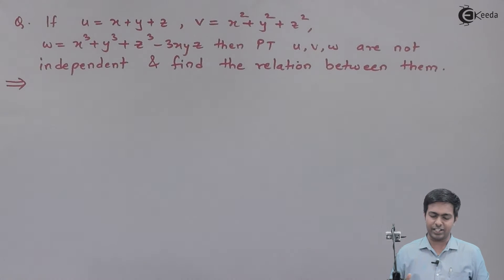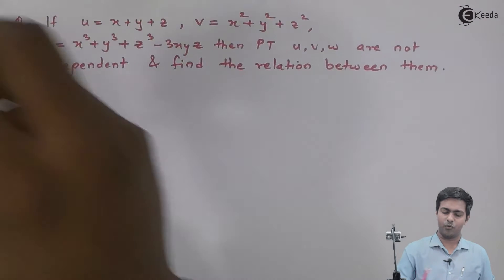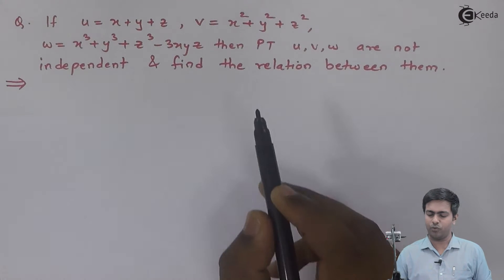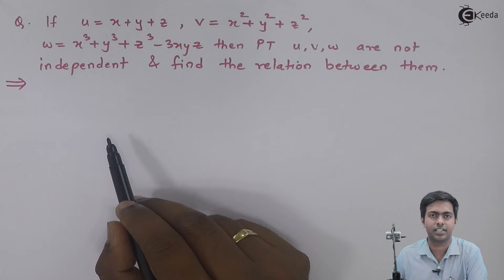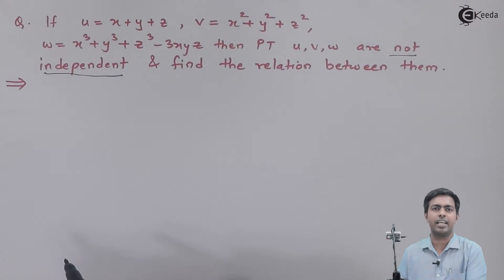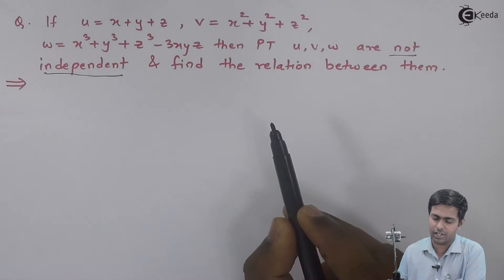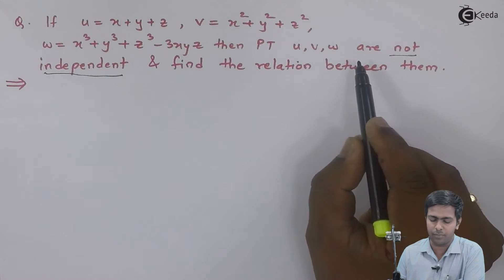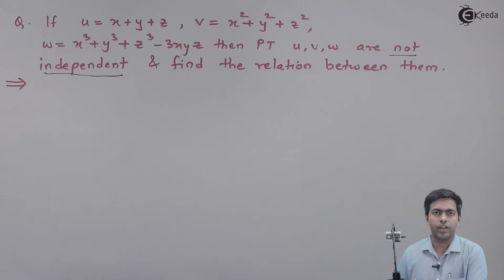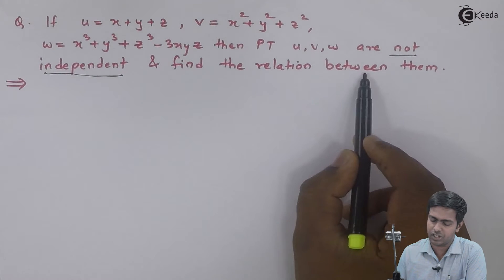Hi friends. In this video we are going to solve a problem based on functional dependence. Here u, v, and w are given in terms of x, y, and z, and we have to prove that u, v, w are not independent. Not independent is nothing but dependent, so we want to prove that u, v, w are dependent and then find the relation between them.